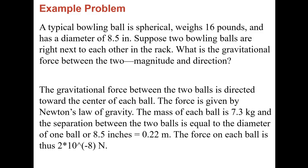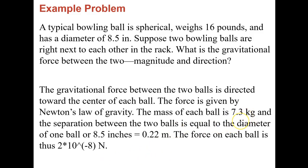Next problem: two bowling balls, each weighing 16 pounds with a diameter of 8.5 inches, are placed right next to each other. Converting: mass of each ball is about 7.3 kilograms, and the diameter converts to about 0.22 meters. Since the balls are touching, the distance between their centers equals one diameter, 0.22 meters. Using F = G × m₁ × m₂ / r², the gravitational force comes out to about 2 × 10⁻⁸ newtons.